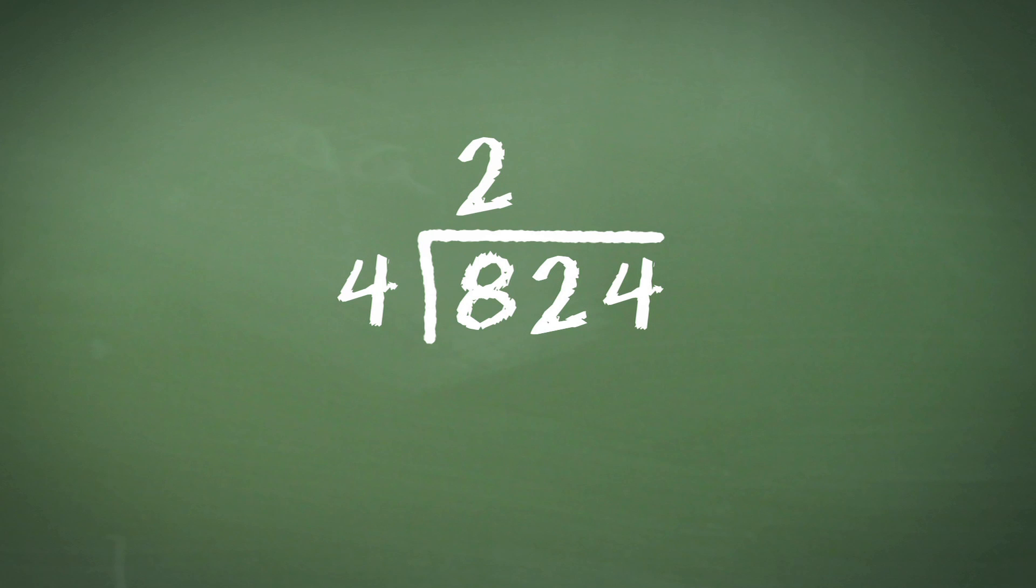Our next step is to move on to the 2 of the 824 in the tens column. Now you'll notice that 4 does not divide into 2 as a whole number. We therefore put a 0 above the 2. And we now have to carry the 2 of the 824 across to the 4 in the units column.